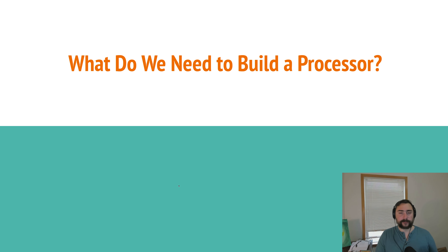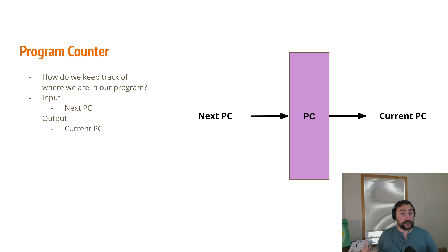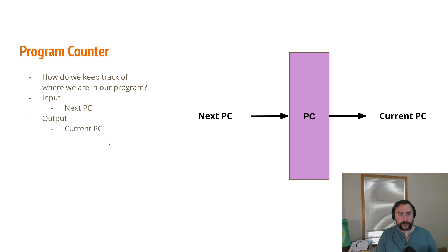One of the core things we're going to need is the program counter. Our program counter answers the question of how do we keep track of where we are in our program — what instruction are we executing right now and what instruction are we going to execute next? The input is the next program counter value — where are we going next — and the output is the current program counter value, where we are right now inside of a program.